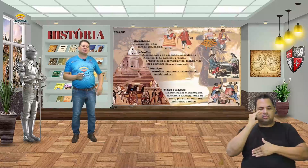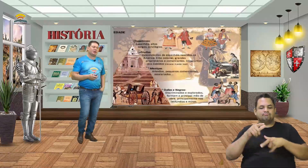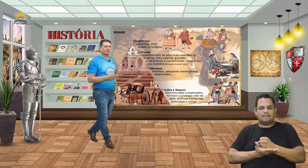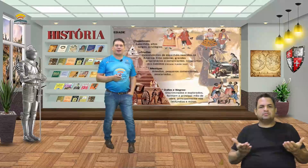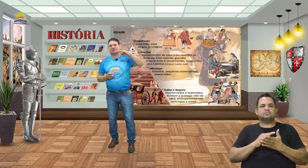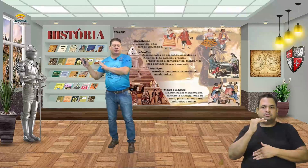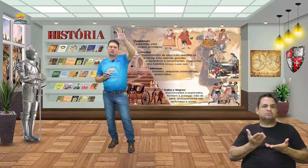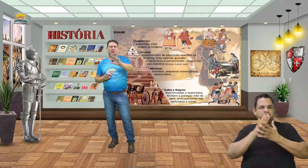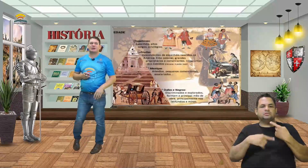Índios e negros eram quem trabalhava e sustentava os demais. Essa é a característica da sociedade espanhola — ela era estratificada. Vai ser um pouco diferente da sociedade portuguesa, que tinha o senhor de engenho, o que vamos estudar na aula subsequente.